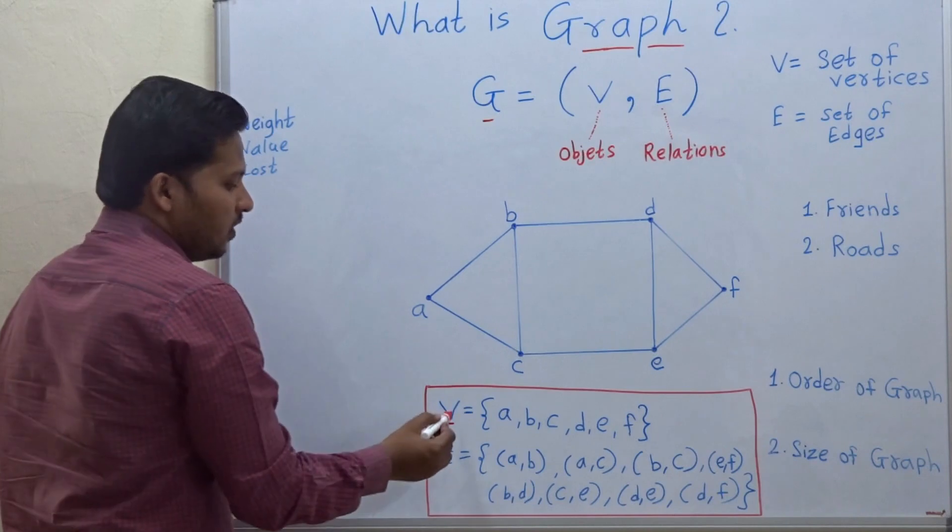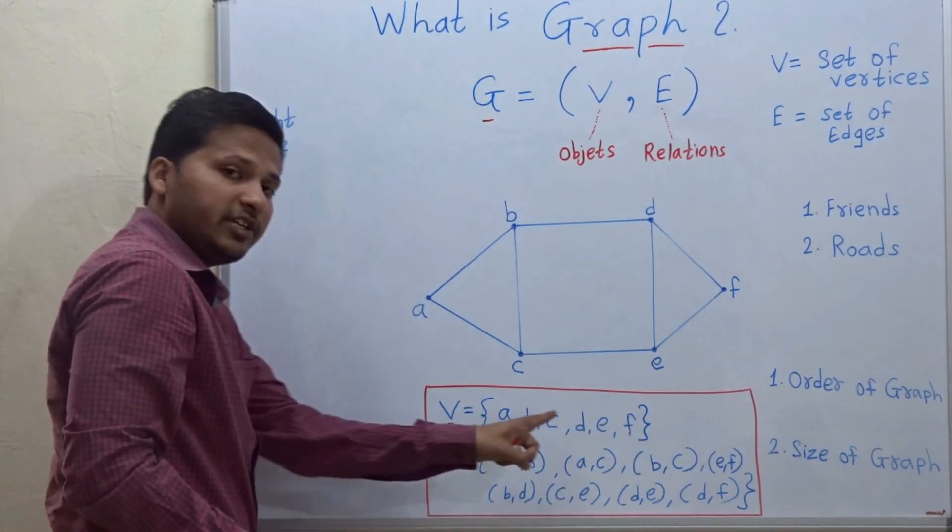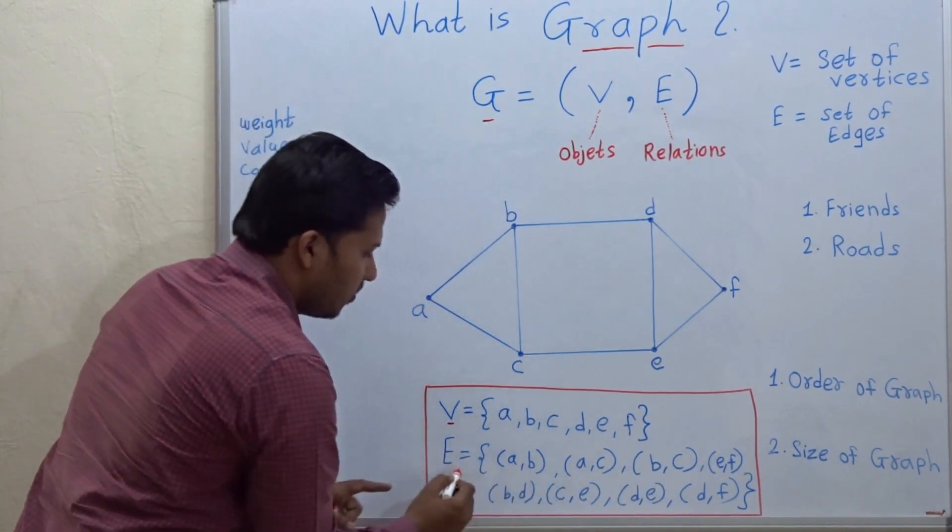So you can see here V equal to a, b, c, d, e, f. This is the set of vertices and this is the set of edges.